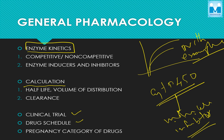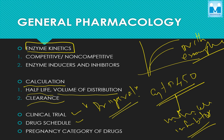A lot of calculations appear in the AIMS paper, mainly from clearance, half-life, volume of distribution, or drip rate calculations — so be thorough with the formulas in this topic. Then there are two tables: one about clinical trials and another about drug schedules. There is also a table on the pregnancy category of drugs, so you have to know about those.